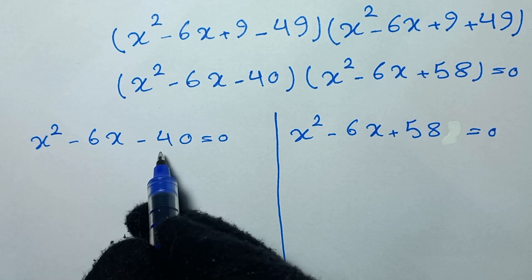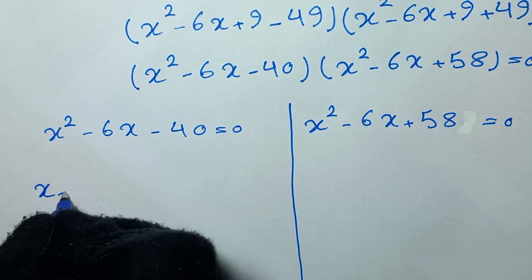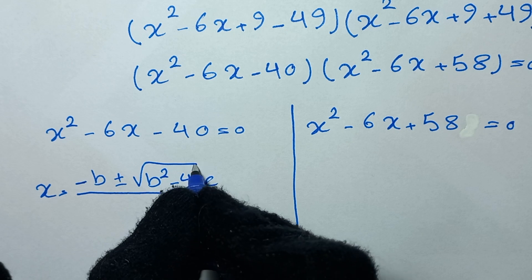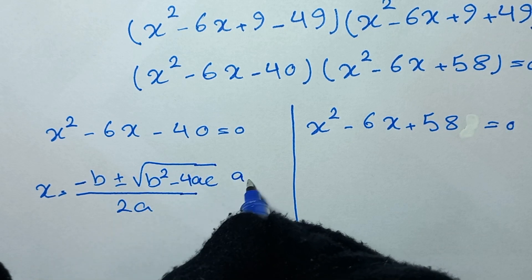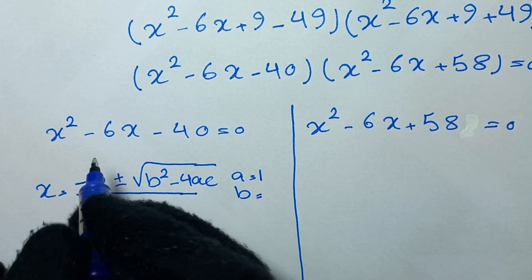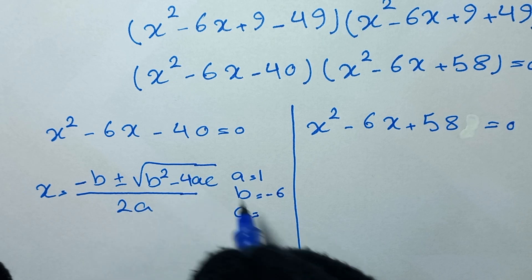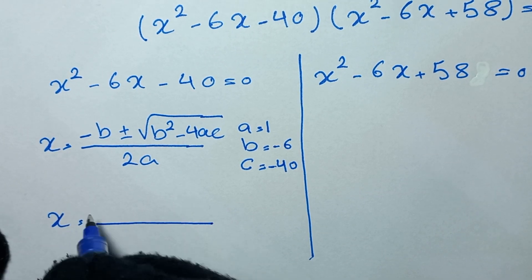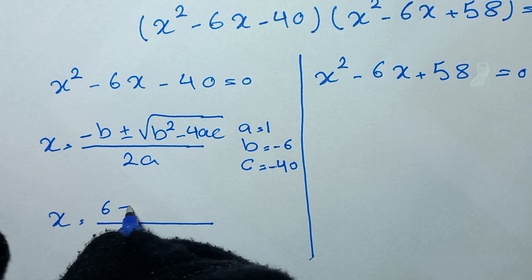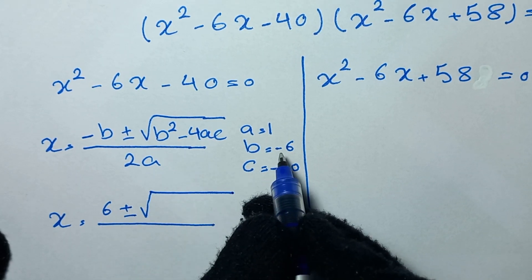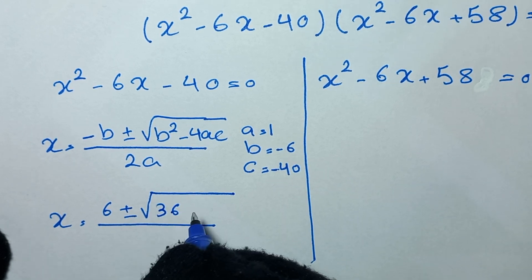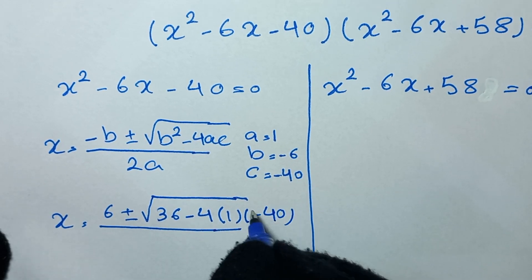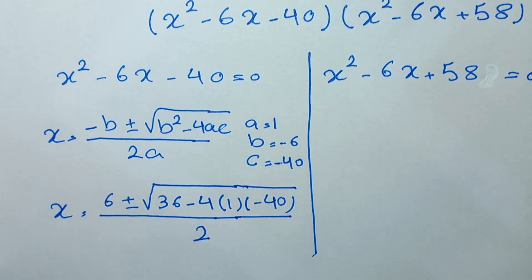For the first equation, we use the quadratic formula: x equals negative b plus or minus the square root of (b squared minus 4ac), all over 2a. Here a is the coefficient of x squared which is 1, b is the coefficient of x which is negative 6, and c is the constant which is negative 40. So x equals negative negative 6, which is positive 6, plus or minus the square root of (b squared minus 4ac), over 2a which is 2.